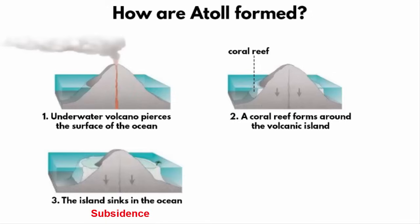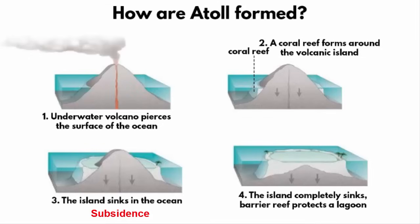Ultimately, the island sinks below the sea and all you can see is a ring-shaped island formed with coral reef. This is what is known as an atoll. And in between, you will have a pool of water which is called a lagoon.